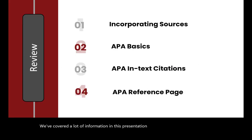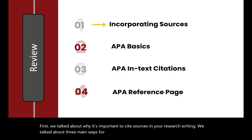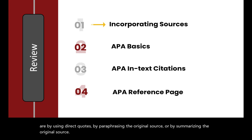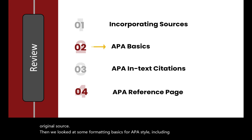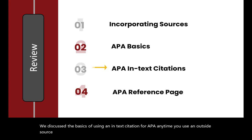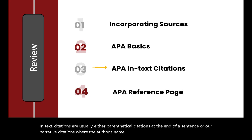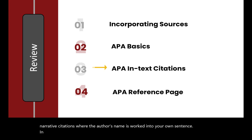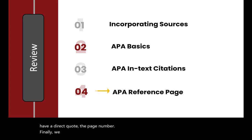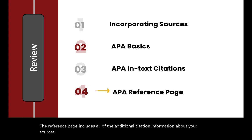We've covered a lot of information in this presentation about APA citation style. First, we talked about why it's important to cite sources in your research writing. We talked about three main ways for incorporating sources into your own writing: using direct quotes, paraphrasing the original source, or summarizing the original source. Then, we looked at some formatting basics for APA style, including how to format the title page of your paper. We discussed the basics of using an in-text citation for APA anytime you use an outside source. In-text citations are usually either parenthetical citations at the end of a sentence, or narrative citations where the author's name is worked into your own sentence. In-text citations consist of the author's last name, the year of publication, and, if you have a direct quote, the page number. Finally, we looked at the formatting of the reference page, which goes at the end of your paper. The reference page includes all of the additional citation information about your sources that does not get put in text.